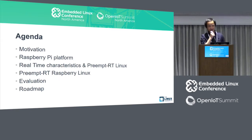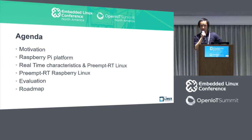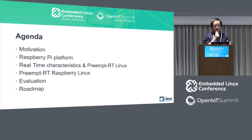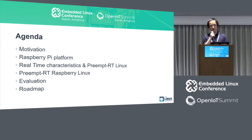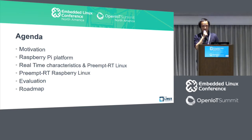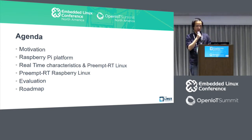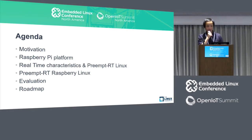Let's go through the agenda. First, I'd like to introduce my motivation. Second, let's look at the Raspberry Pi hardware quickly. Third, I'd like to talk about real-time, especially preempt-RT Linux. Then let's review what we have done in terms of preempt-RT Raspberry Pi Linux. We also have an evaluation. The last part is about a roadmap on my side — what we're going to do in the future.